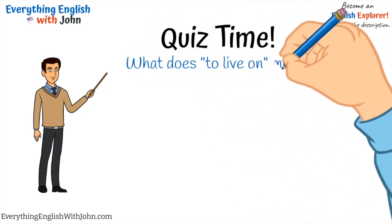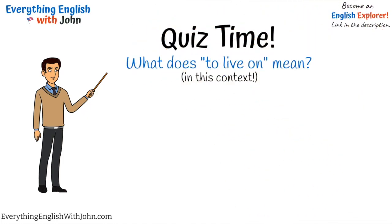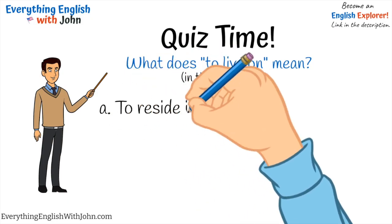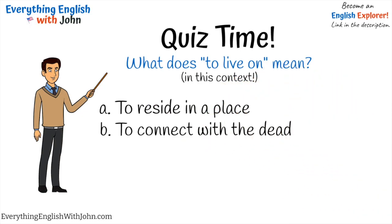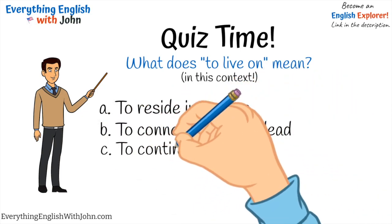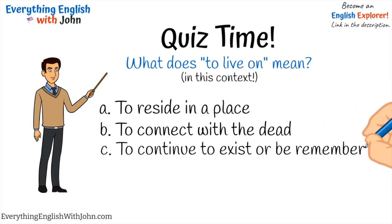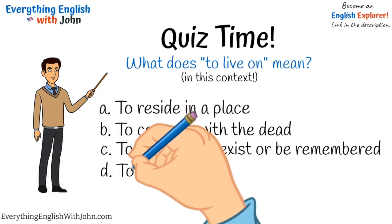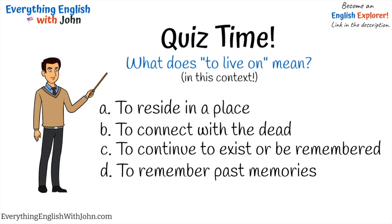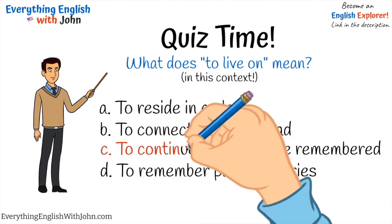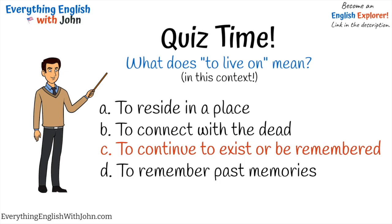What does 'to live on' mean? A: To reside in a place. B: To connect with the dead. C: To continue to exist or be remembered. D: To remember past memories. Please pause the video and answer the question. That's right, it's C — to continue to exist or be remembered.